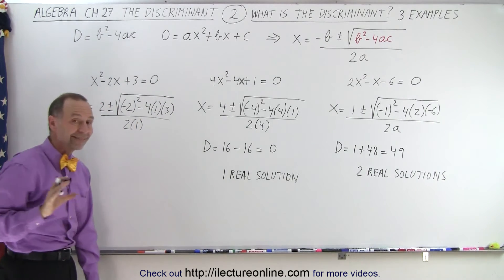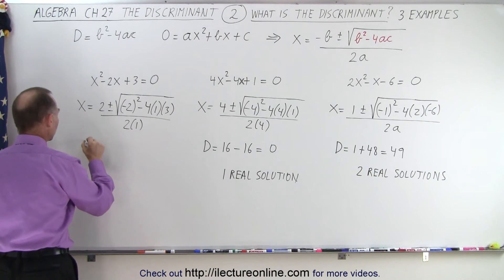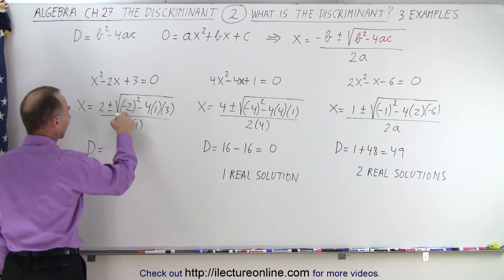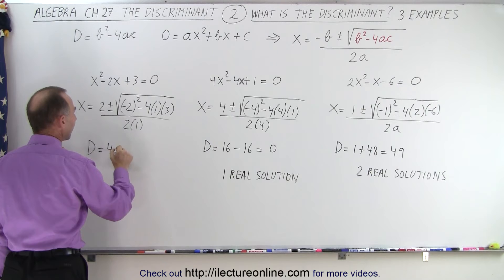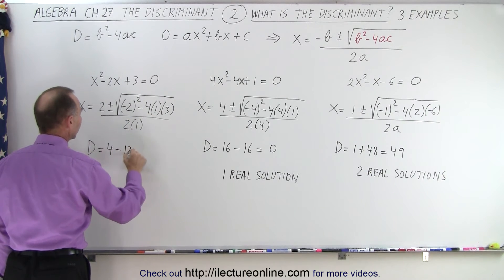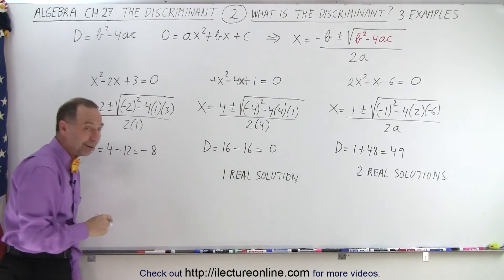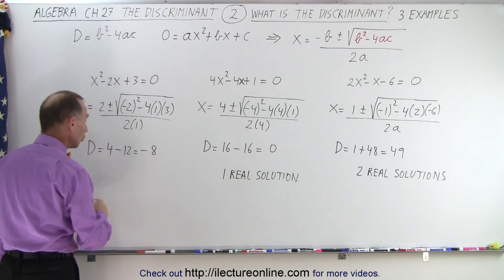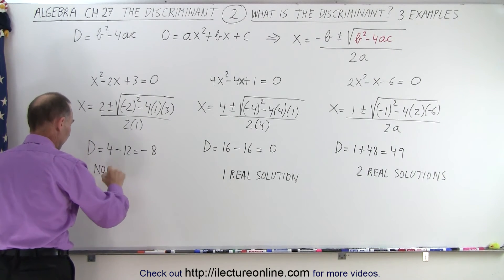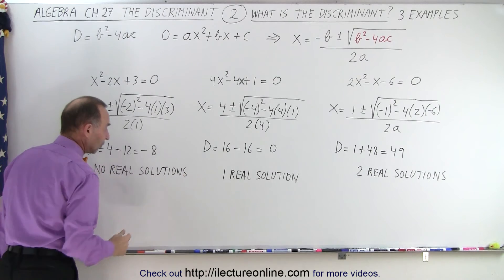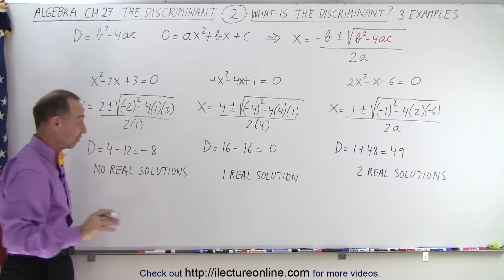We only care about what's inside the radical sign, so the discriminant equals (-2)² which is 4, minus 4 times 3 which is 12, which is -8. That's a negative number, less than 0, which means there are no real solutions. Of course, that means there are two imaginary solutions.